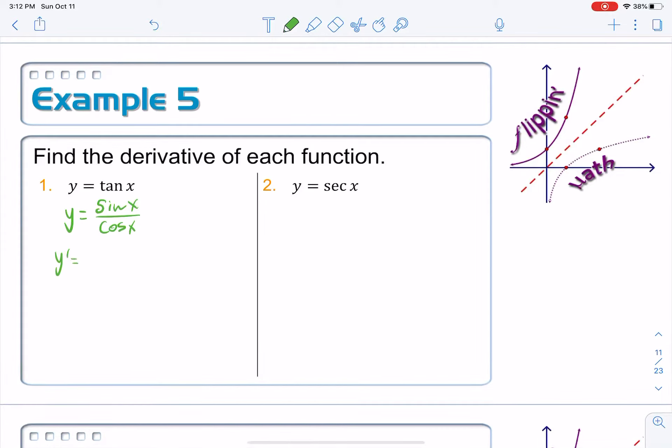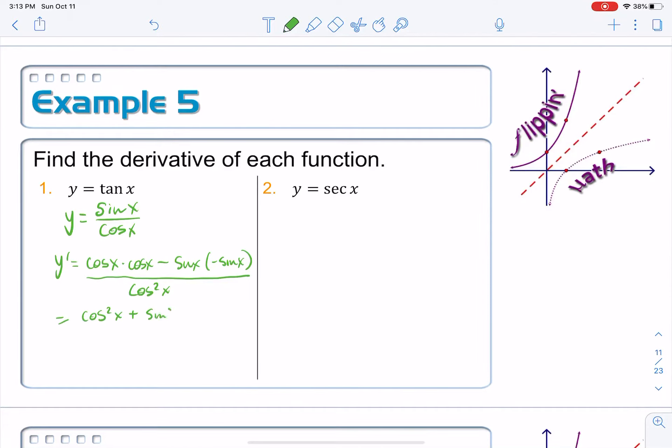So y prime is equal to the derivative of the top is cosine times the bottom cosine, minus the top sine x times the derivative of the bottom negative sine x, all over the bottom squared, cosine squared x. And now it's time to clean this up. So cosine cosine is cosine squared, and then we have a negative sine times a negative sine plus sine squared over cosine squared x.